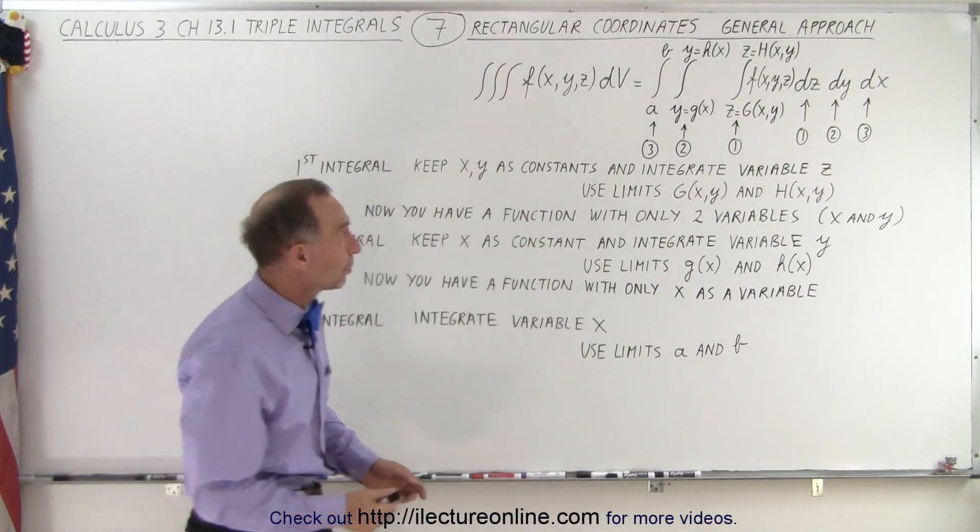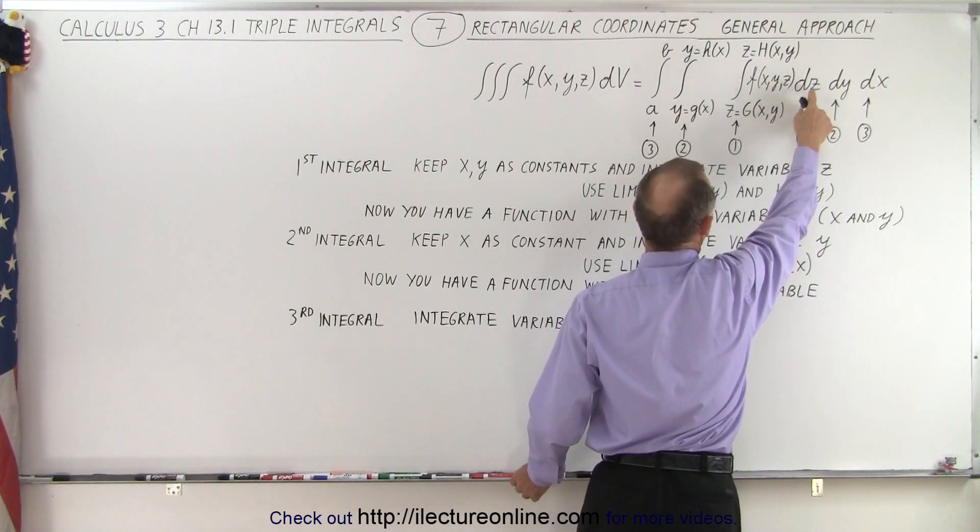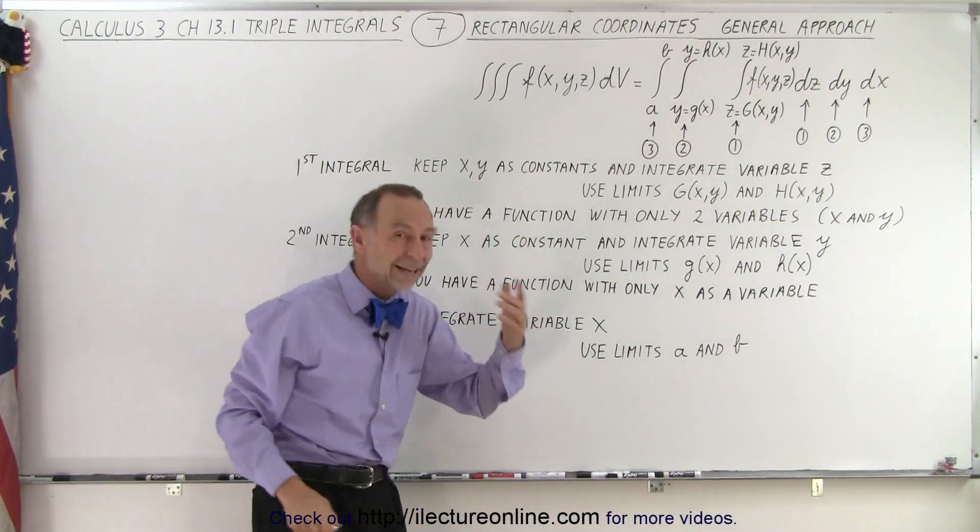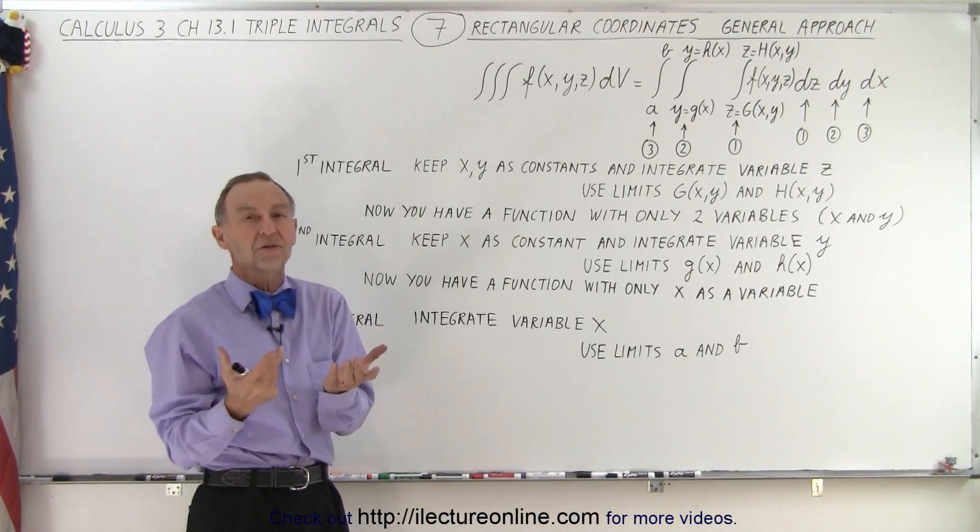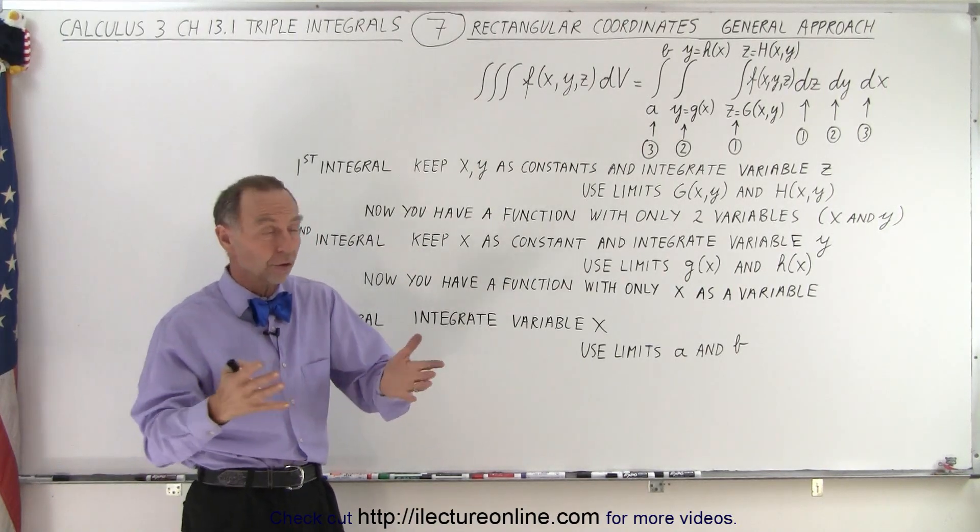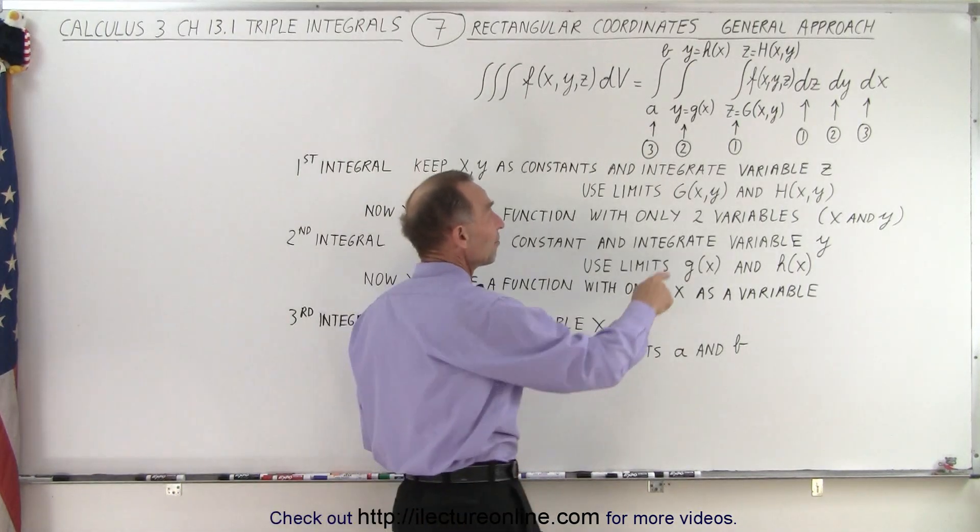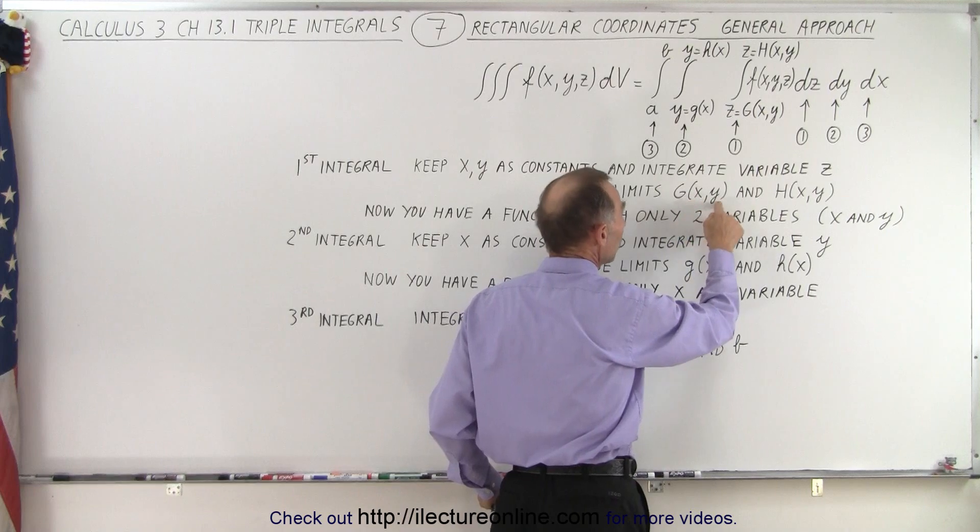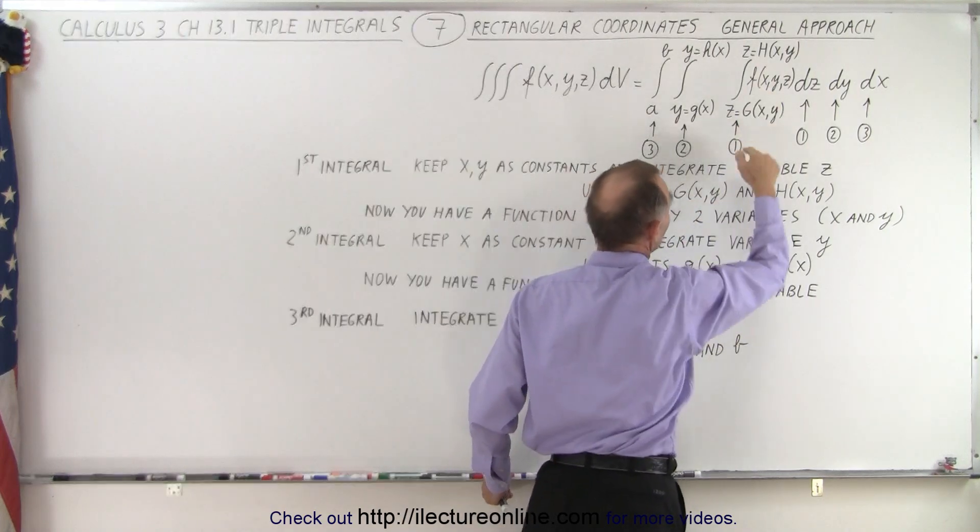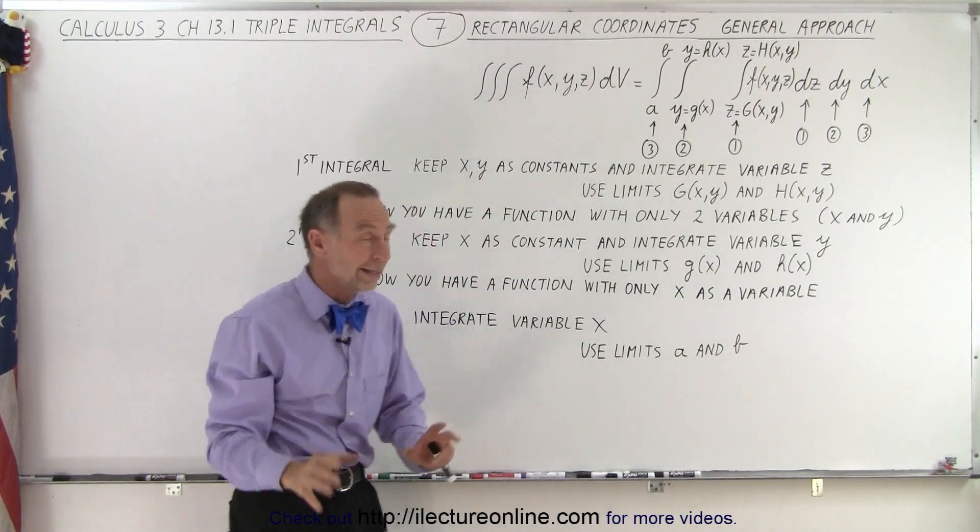So your first integral would be this integral right here. And that would mean that we're going to integrate over z. That also means that x and y are considered as constants. So when you integrate over z, x and y are just like constants. They're just like numbers. And the limits are going to be functions of x and y.